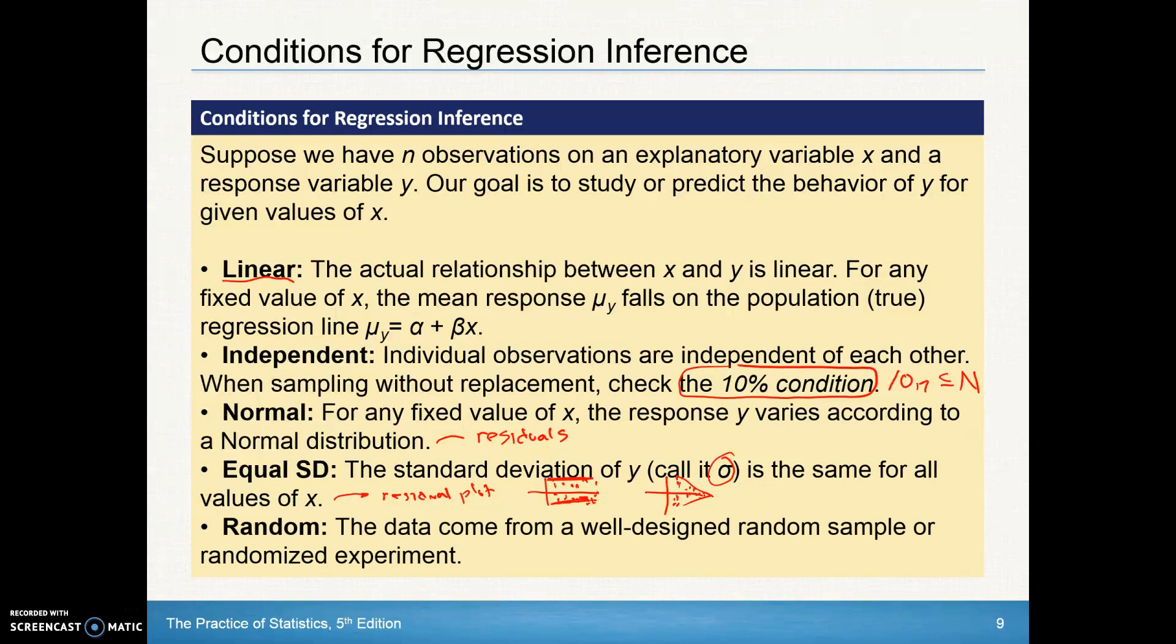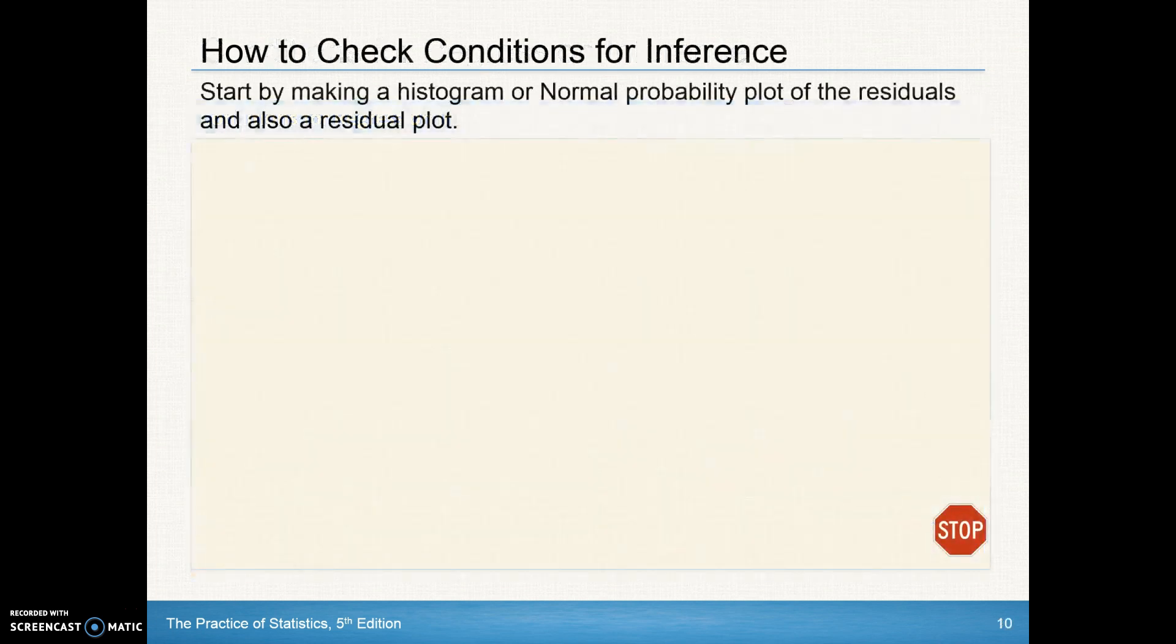And then we've got to look at randomness. We put this last for the ability to use a mnemonic device here but again our data should always come from a well-designed random sample and make sure that we at least have a randomized experiment. So what we can do to help us remember that second box we've got a new mnemonic device we've got L-I-N-E-R, kind of look at that as Liner, and it also kind of helps us remember that if we're doing regression analysis for regression inference we're doing linear regression so it might help us remember that we've got to do the Liner part.